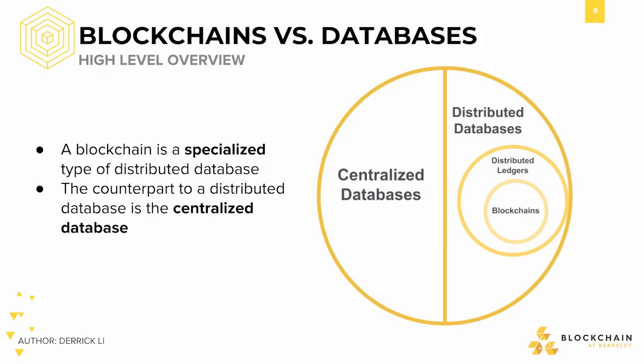Of course, with a centralized database, you would have to trust a single database — there's no consensus to be reached. With distributed databases, that's where the idea of trust starts to be more of a concern. In distributed databases, you could have a network of trusted fault-tolerant databases. However, within distributed databases, we can also have distributed ledgers, which generally imply looser trust guarantees. They enable parties who don't fully trust each other to come to consensus. And then finally, blockchains are a subclass of distributed ledgers.